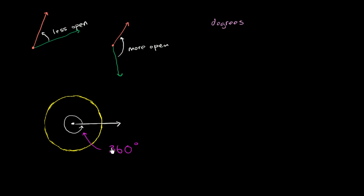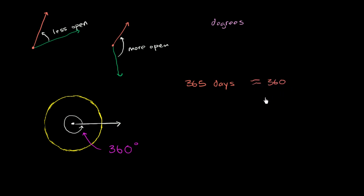Now you might be saying, where did this 360 number come from? No one knows for sure, but there are hints in history and in the way the Earth's rotation around the sun works. You might recognize that there are 365 days in a non-leap year, 366 in a leap year. Ancient astronomers might have said, well, that's pretty close to 360. Several ancient calendars, including the Persians and the Mayans, had 360 days in their year.